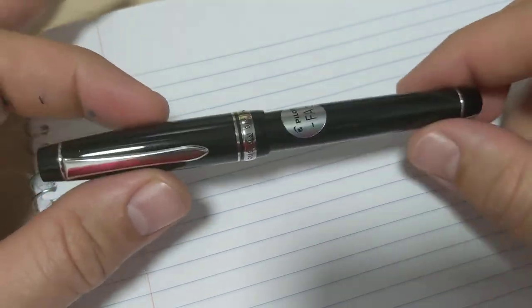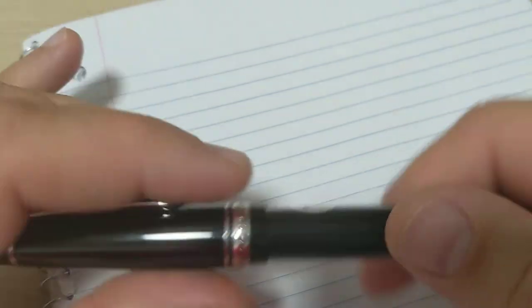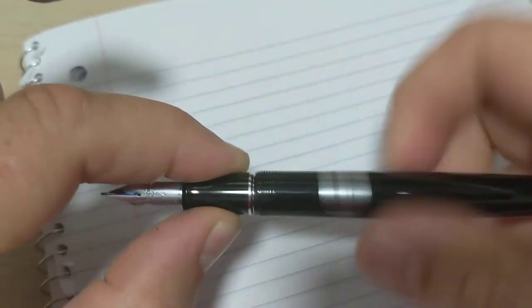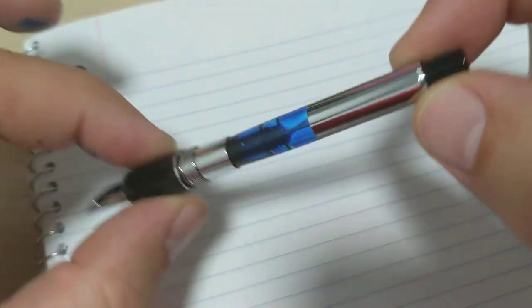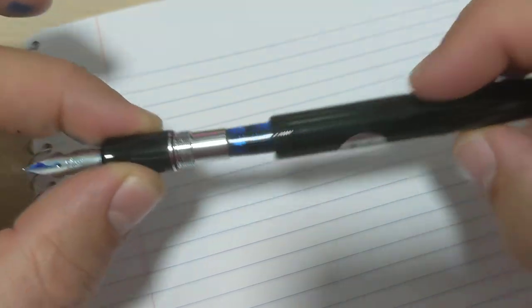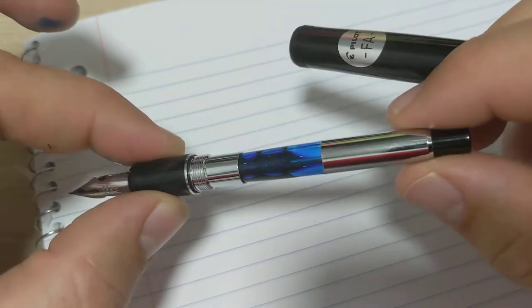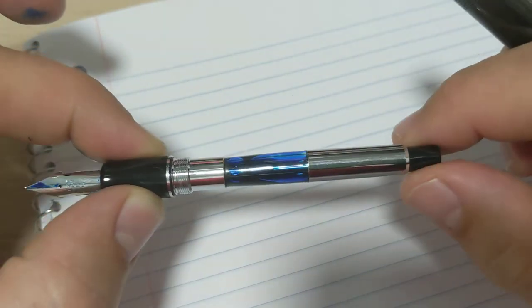Anyways, the 912 - good pen, very well made, it's Pilot. You can see tons more reviews about the construction. The converter is the larger one, the CON-70 I think it's called. Holds a good amount of ink, easy to use.